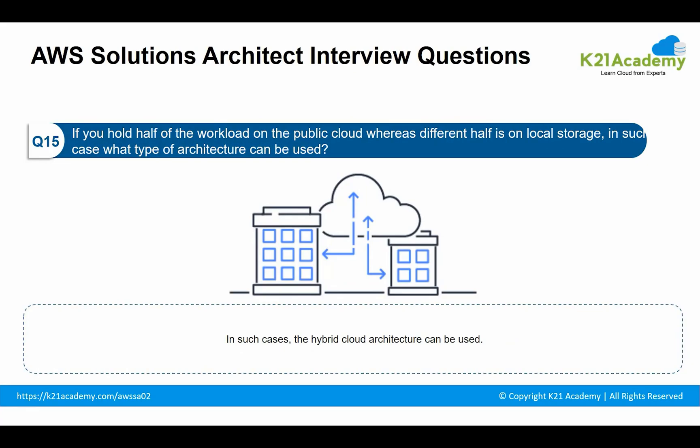The next question: if you hold half of your workload on the public cloud and the other half on local storage, what type of architecture can be used? In such cases, hybrid cloud architecture can be used, because the hybrid cloud is a mixture of public cloud and private cloud.